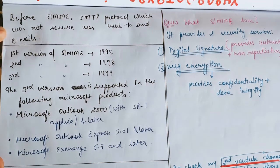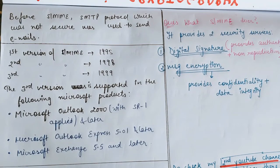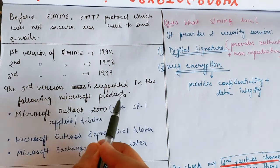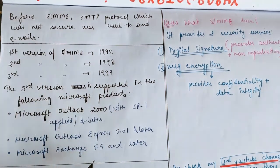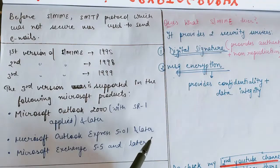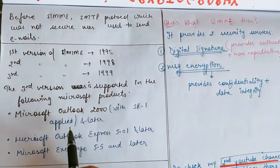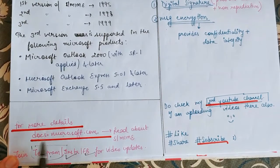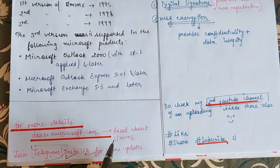If you want to go in detail about this topic, you can search SMIME and refer to docs.microsoft.com where you will get a detailed version including the history. The third version is supported in Microsoft Exchange 5.5 and later, Microsoft Outlook Express 5.01 and later, and Microsoft Outlook 2000 with SR1 applied and later versions.